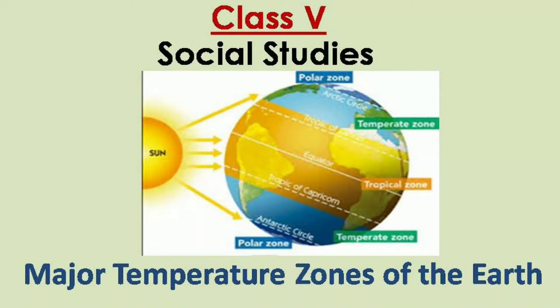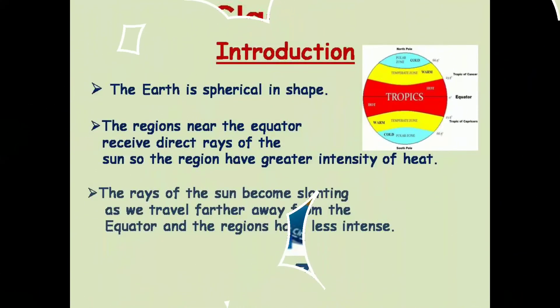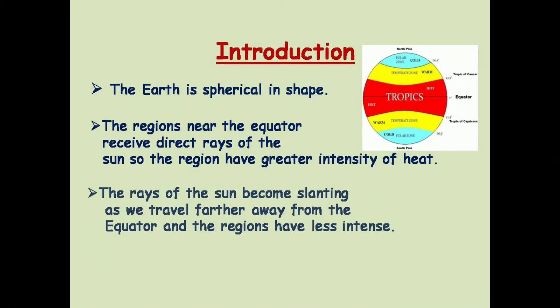Hello children, today we are going to discuss about the major temperature zones of the earth. As you know, the earth is spherical in shape and this spherical shape is responsible for the uneven distribution of heat around the world. The region located near the equator receives direct rays of the sun, which spread over less area on the earth's surface and therefore have greater intensity of heat.